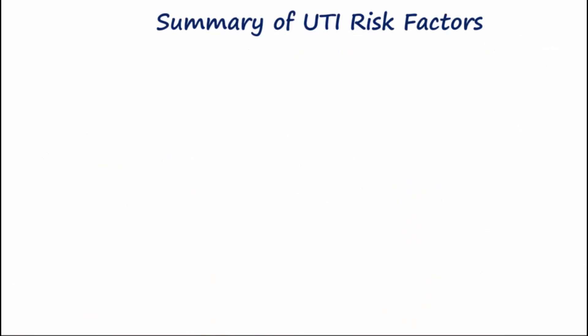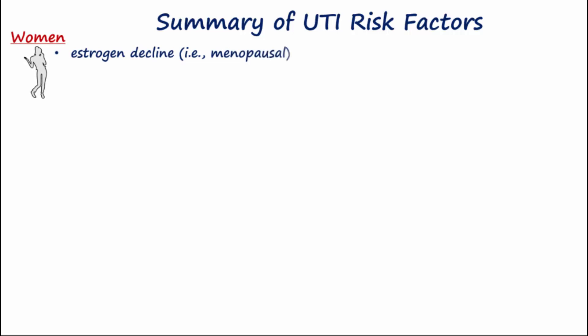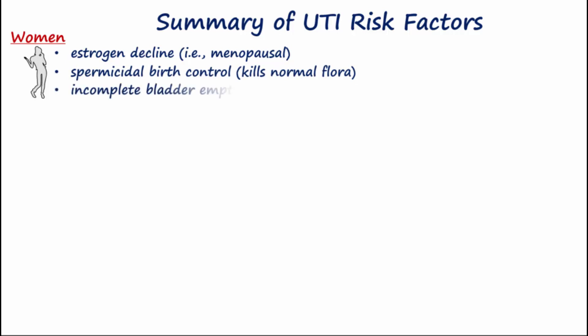For women, estrogen decline — which is typically related to menopause — can cause thinning of mucous membranes, increasing the risk for infection. Other risk factors include spermicidal birth control, which may kill normal flora like Lactobacillus acidophilus, and conditions that lead to incomplete bladder emptying, which compromise the washout phenomenon.